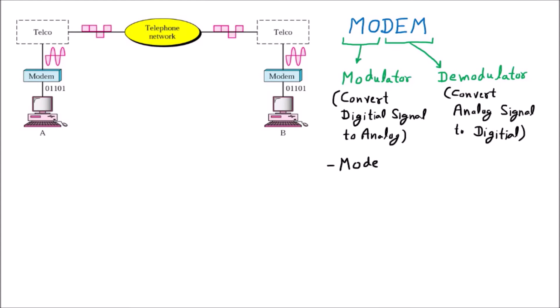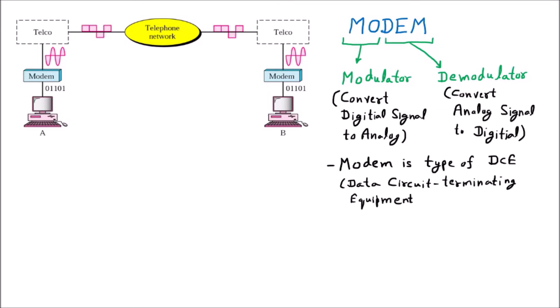The modem is a type of DCE, which stands for Data Circuit Terminating Equipment — a topic already discussed in the earlier lecture on DTE and DCE. Now talking about modem specifications: when we go to purchase a modem from the market, there are a few things we need to take care of, just like when purchasing a mobile there are features to consider. Similarly, the modem has its own specifications.